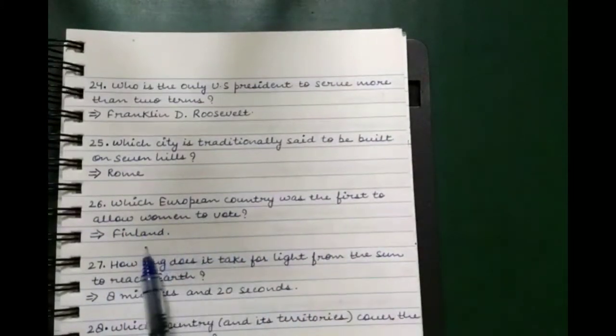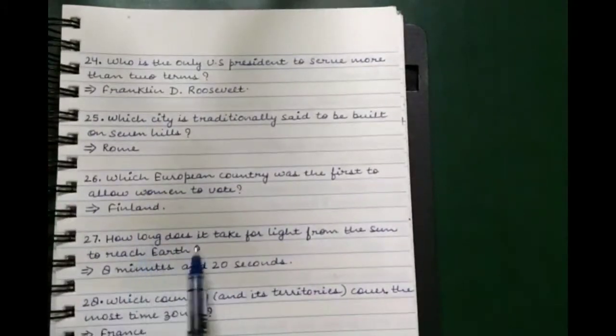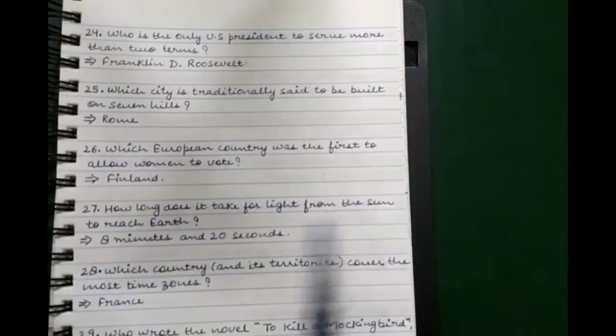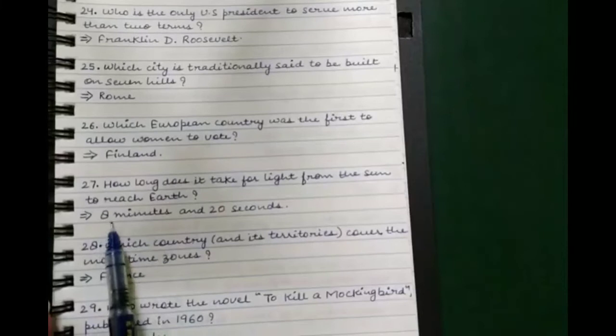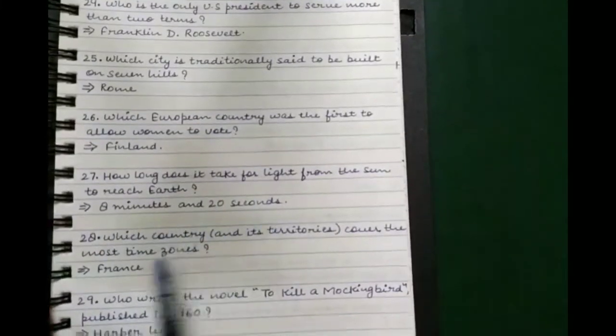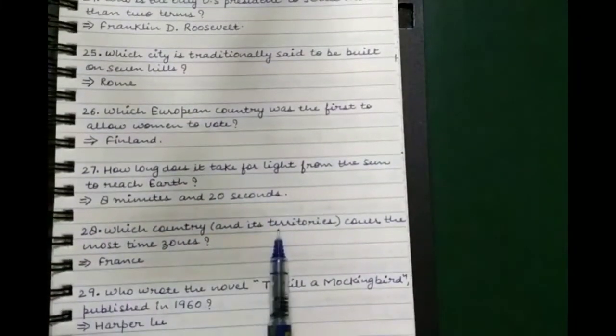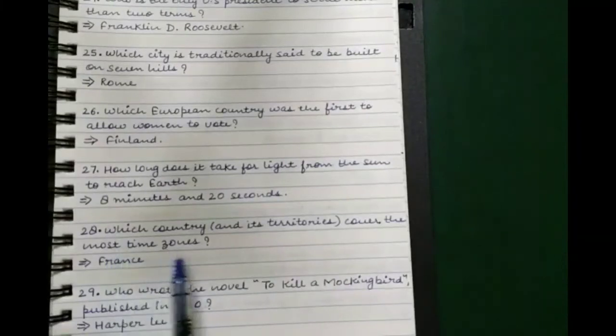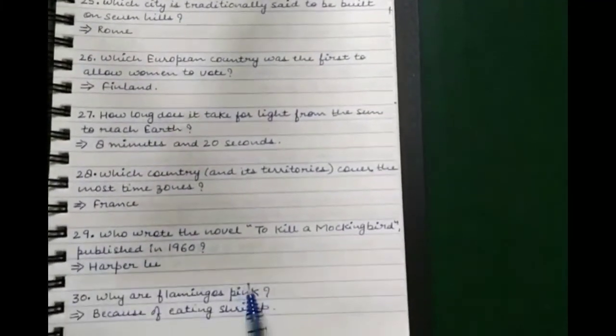Which city is traditionally said to be built on seven hills? Rome. Which European country was the first to allow women to vote? Finland. How long does it take for light from the sun to reach the earth? 8 minutes and 20 seconds.